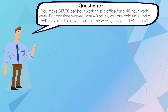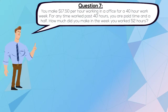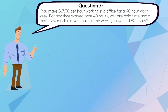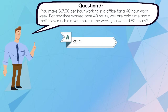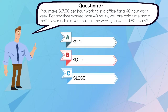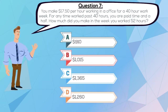Question 7. You make $17.50 per hour working in an office for a 40-hour work week. For any time worked past 40 hours, you are paid time and a half. How much did you make in the week you worked 52 hours? A. $910, B. $1,015, C. $1,365, or D. $1,260.